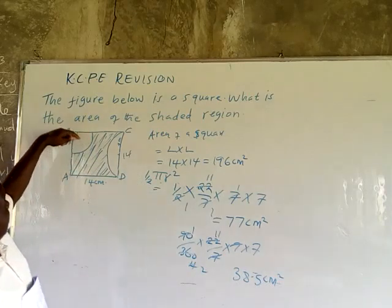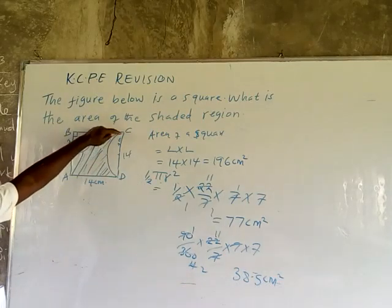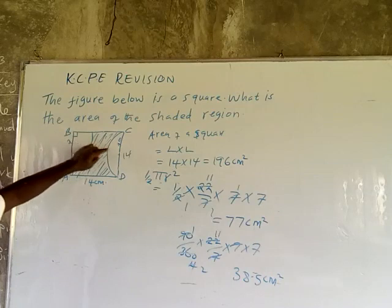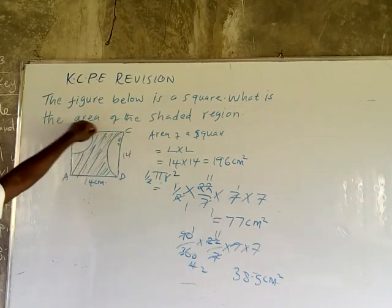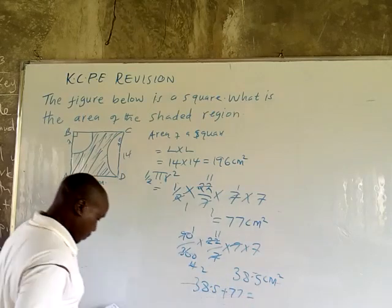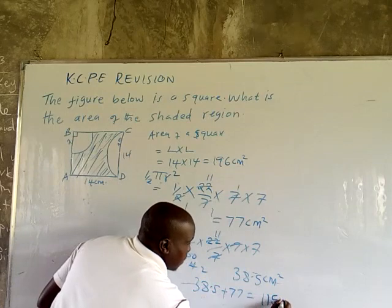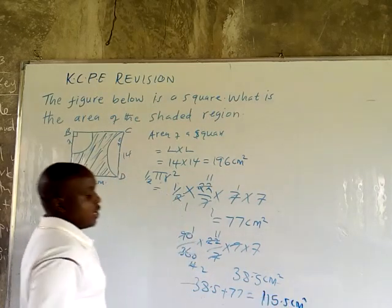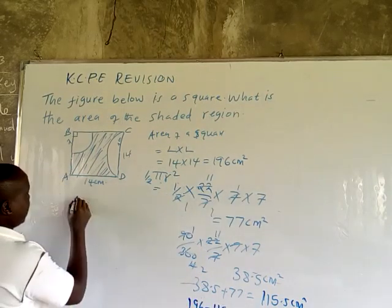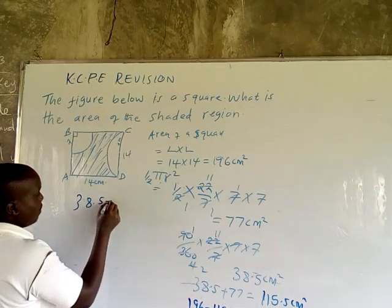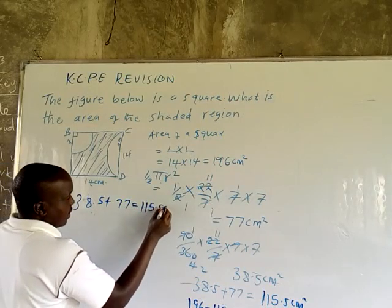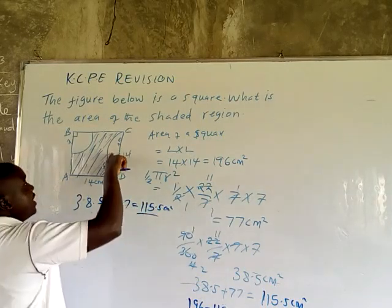So the area here is 38.5, and the area of the semicircle is 77. We add the areas together — the total area of the unshaded region. Since we want the shaded area, we subtract from the whole. 38.5 plus 77 equals 115.5 cm². This is the total area of unshaded regions — this one and this one.